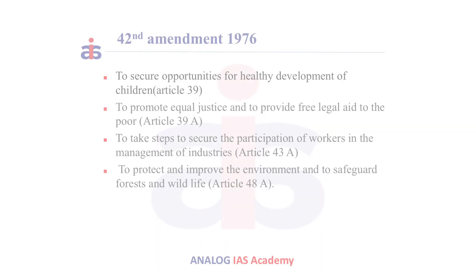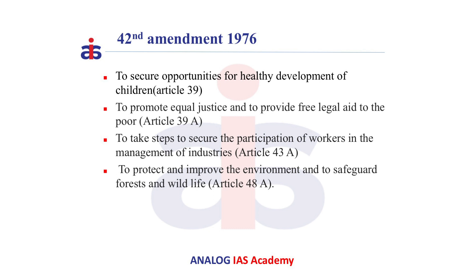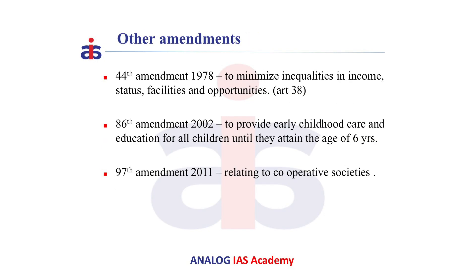Now let us see some of the articles added by the 42nd Constitutional Amendment Act, 1976. They are: to secure opportunities for healthy development of children — Article 39; to promote equal justice and to provide free legal aid to the poor — Article 39A; to take steps to secure the participation of workers in the management of industries — Article 43A; and to protect and improve the environment and to safeguard forests and wildlife — Article 48A.